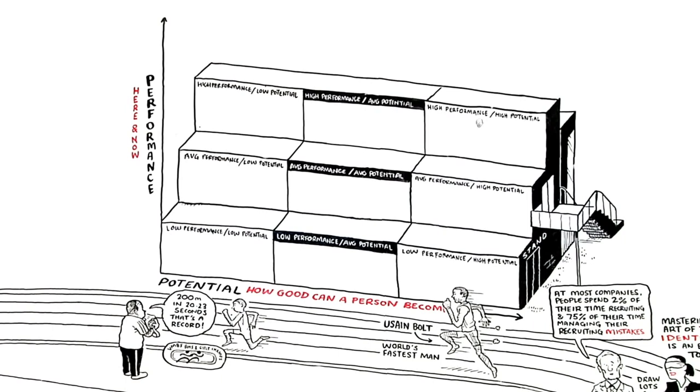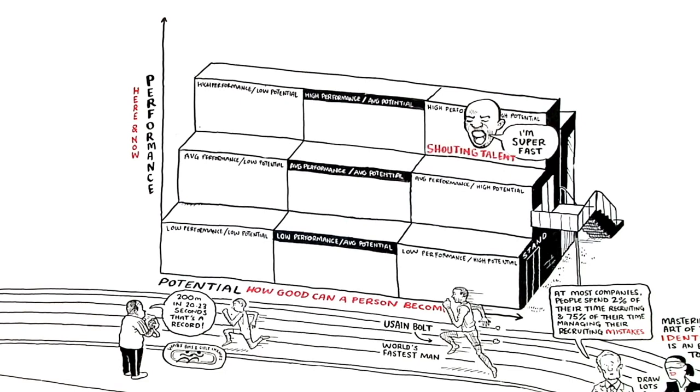In our metrics, people like Bolt are categorized as high performers and high potential. Usain Bolt is an example of what you would call a shouting talent.